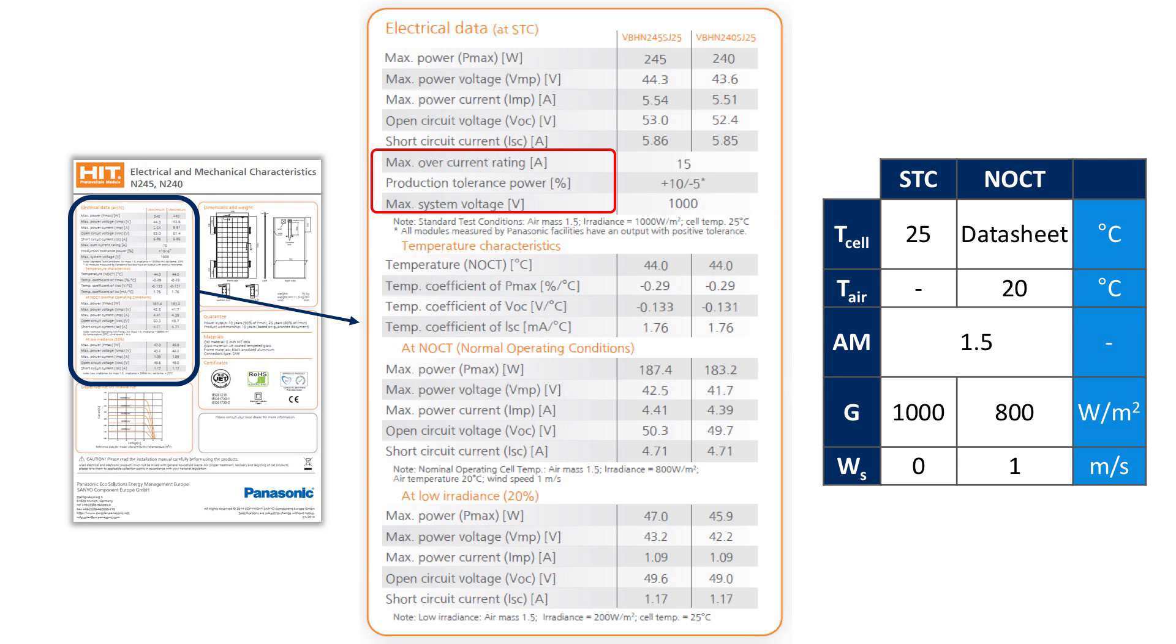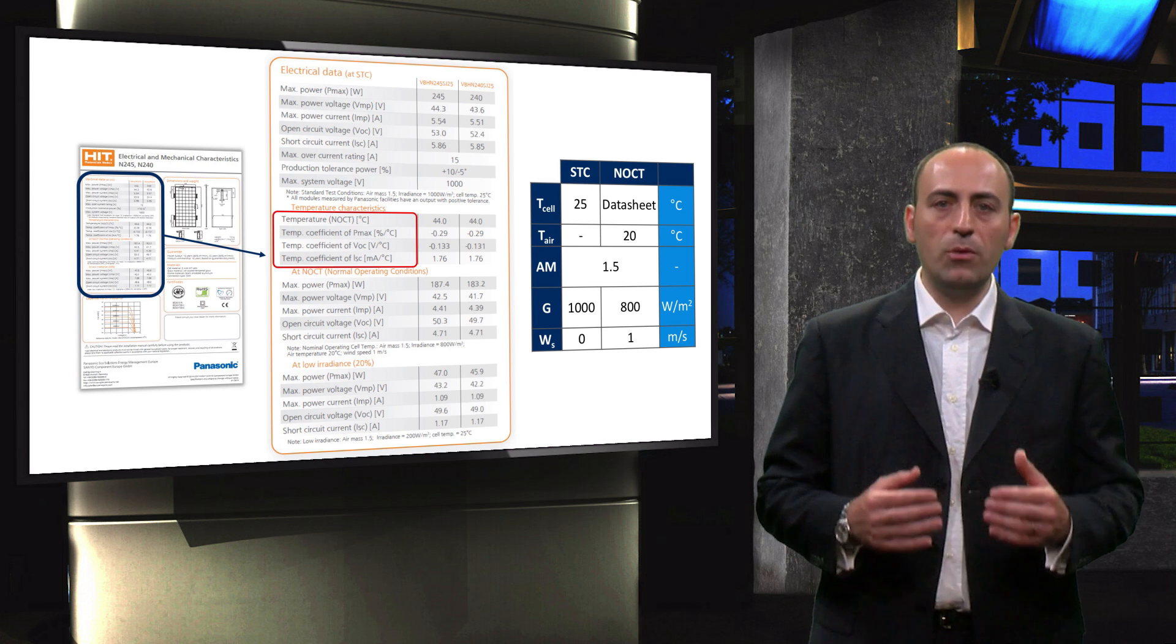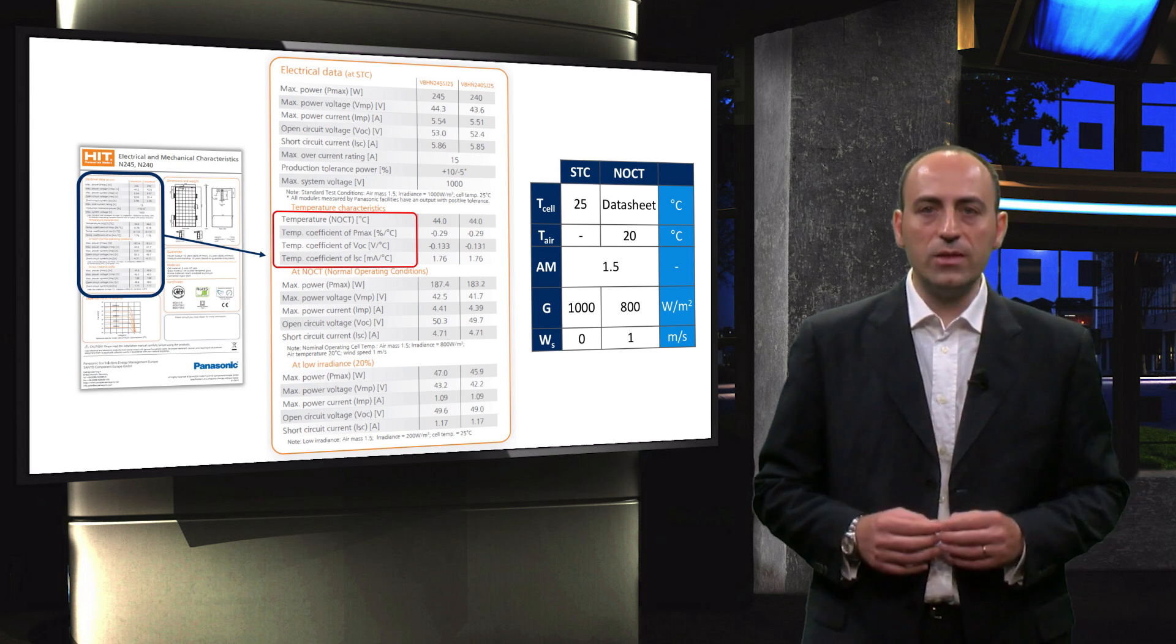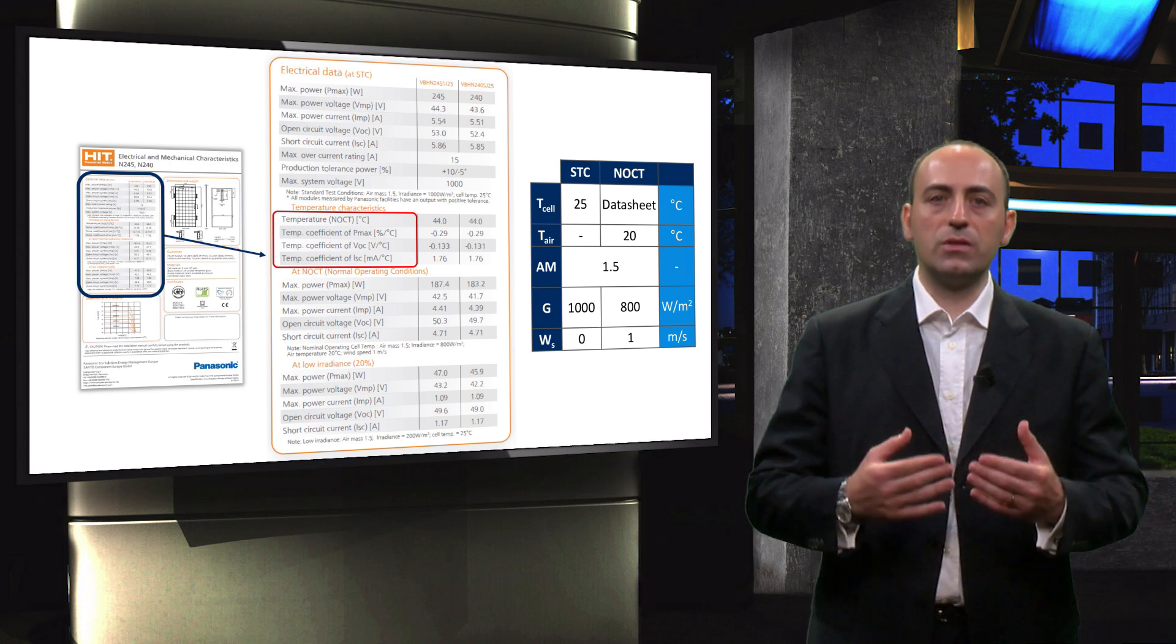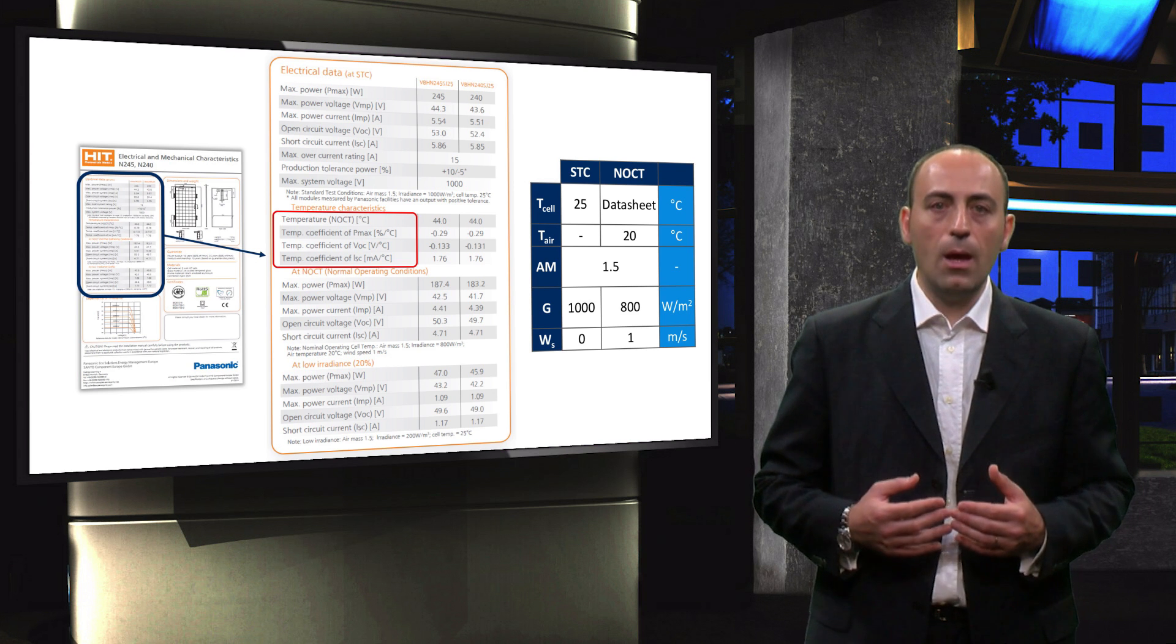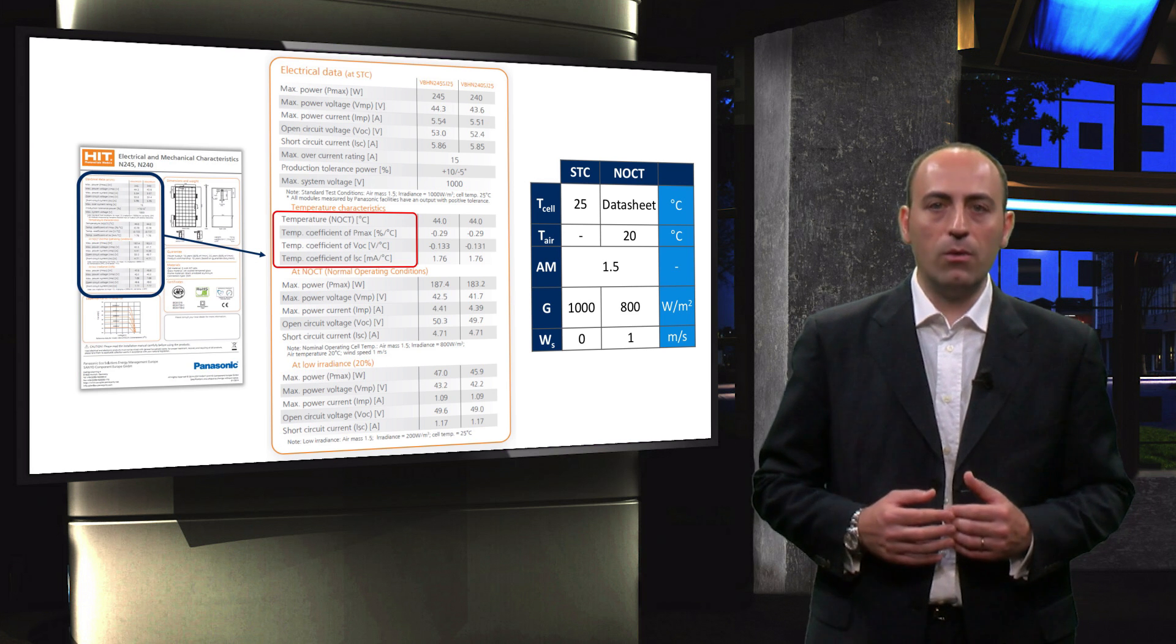I already anticipated that the second table gives the temperature coefficients of maximum power, open-circuit voltage and short-circuit current. They are very important, since the temperature of the solar cell has direct influence on the power output of the PV module. In fact, as you can see, high temperatures increase the short-circuit current, but decrease both the voltage and the maximum power achievable.